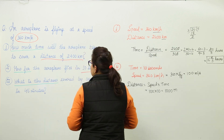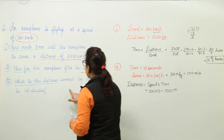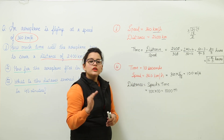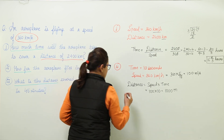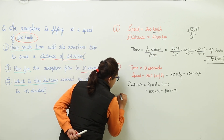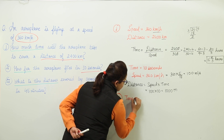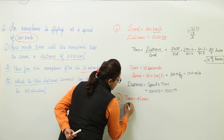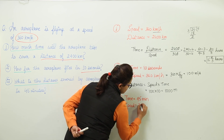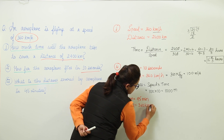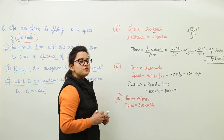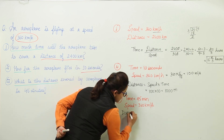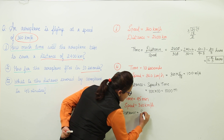The third part asks what distance is covered by the aeroplane in 45 minutes. Again we calculate distance, but now the time is 45 minutes. The speed of the aeroplane is given as 360 kilometers per hour, and we use the formula distance equals speed multiplied by time.